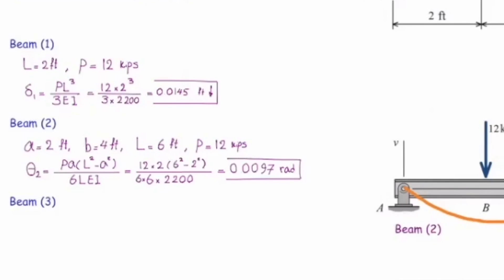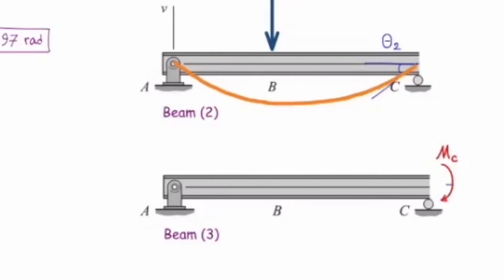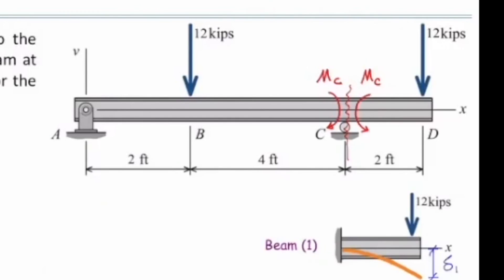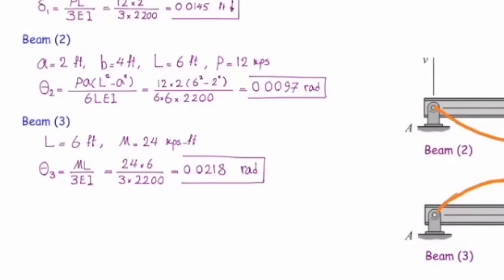The direction of that slope is counterclockwise. Now for beam number three, subjected to the internal moment, the beam bends upward and I need to determine theta at that point. Theta equals ML over 3EI. For this beam, length is 6 feet, and the moment is caused by 12 kips times 2 feet (the distance from the force to point C), giving 24 kip-feet. Plugging in gives 0.0218 radians, and in this case theta is clockwise — opposite to the direction of the previous slope.